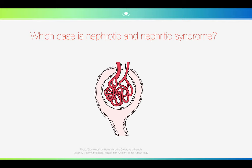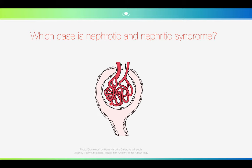Before we move on to investigation and management, you have to understand the differences in pathophysiology for nephrotic and nephritic syndrome. Nephrotic syndrome is caused by damage to the glomerulus, which subsequently causes increased capillary permeability of the glomerular basement membrane. Normally, the glomerulus is formed by capillaries with small pores that allow only small molecules. This is the afferent arteriole, and this is the glomerulus made up of capillaries, which have small pores.